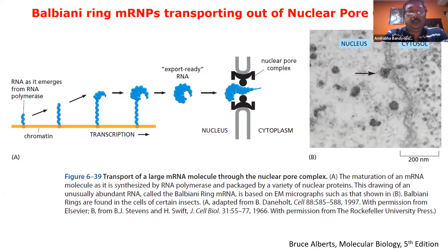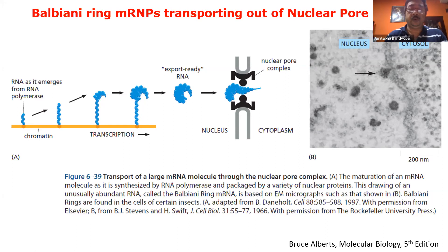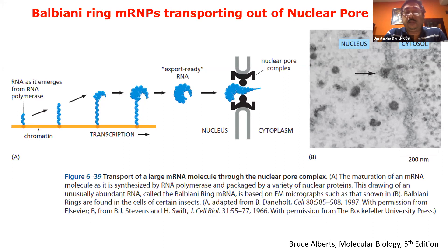In the third lecture on post-transcriptional regulation, we will start with transport of RNA. So what we have learned so far is capping and polyadenylation of the RNA, splicing of the RNA, and now we are talking about the spliced, matured RNA coming to the cytosol.